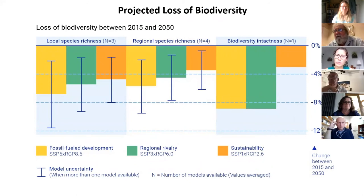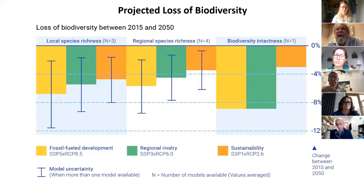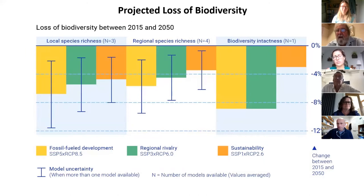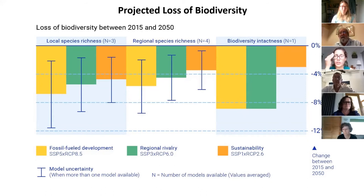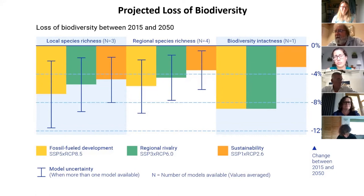One key issue is biodiversity. Looking at three scenarios — yellow, green, and orange, where orange is the sustainability scenario — even with a sustainability scenario, we still see significant local loss of species, loss of regional species richness, and reduced biodiversity intactness between now and 2050. The sustainability scenario is better than the others, but all scenarios from the global biodiversity assessment show significant projected loss of biodiversity over the next 30 years.